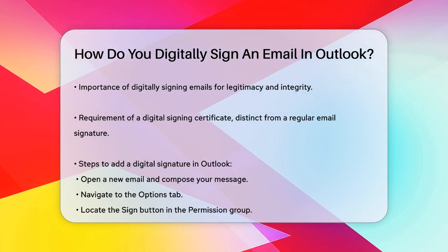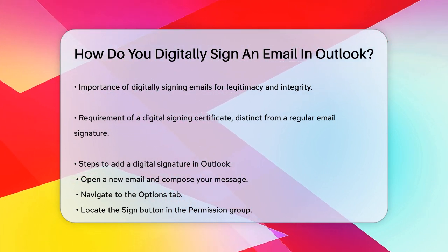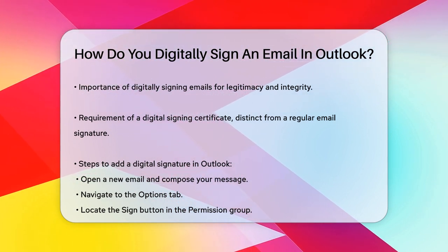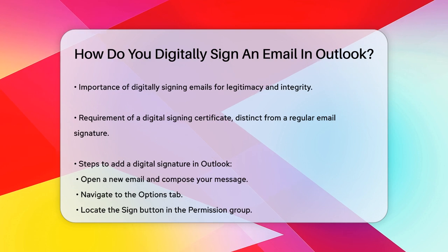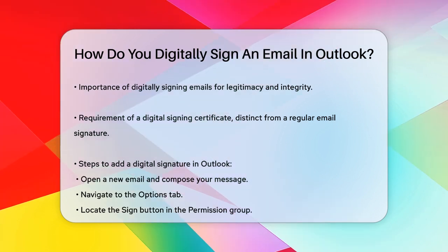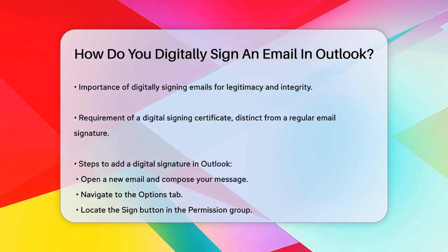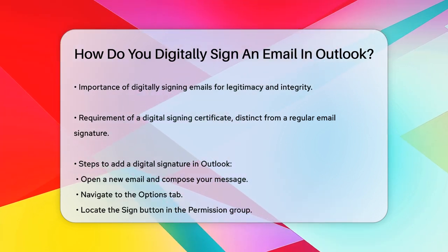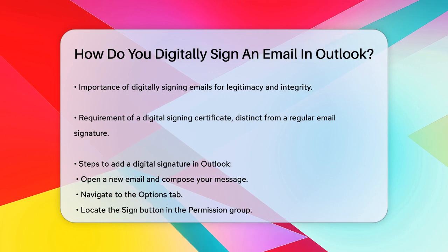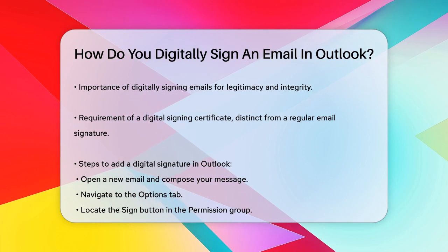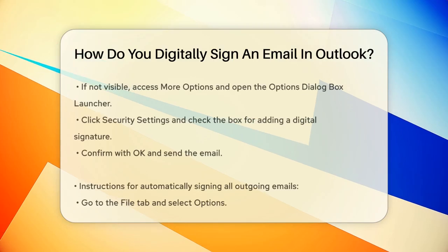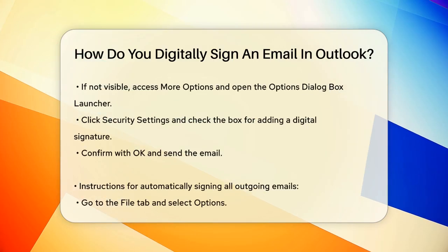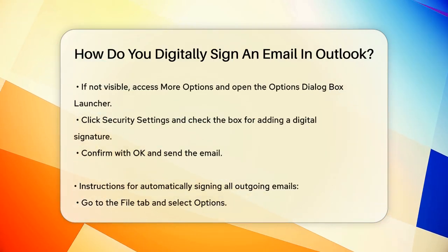To add a digital signature to an email, start by opening a new email in Outlook. Once you've written your message and added any attachments, navigate to the Options tab. Here you'll find the Sign button in the Permission group.